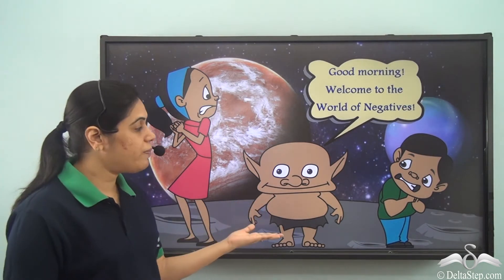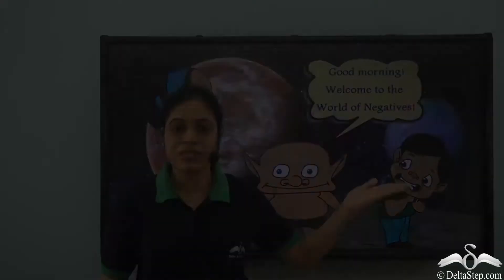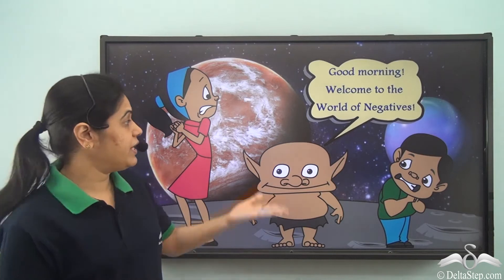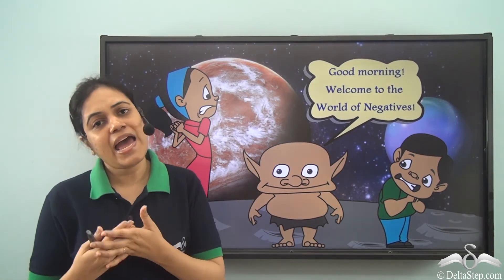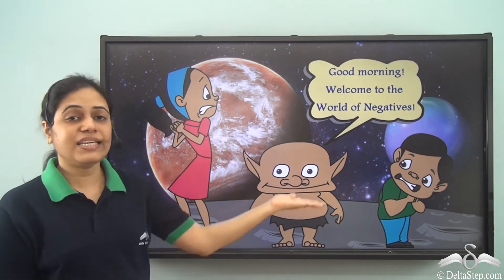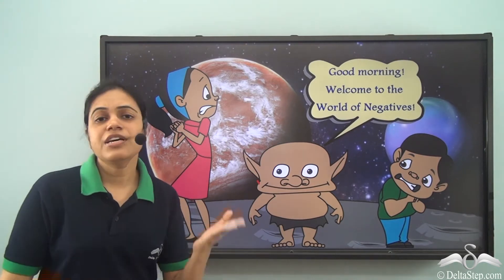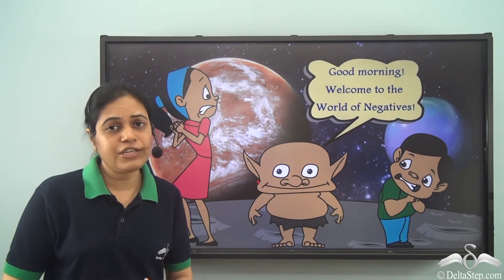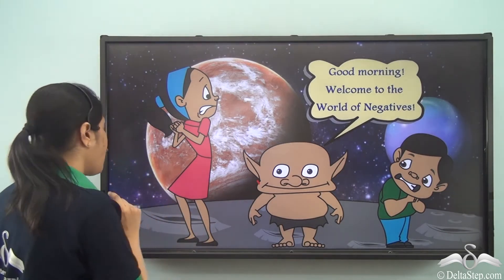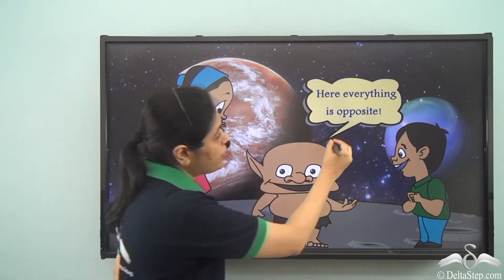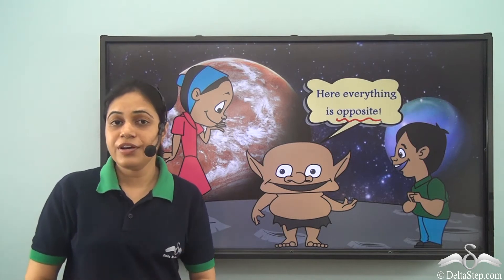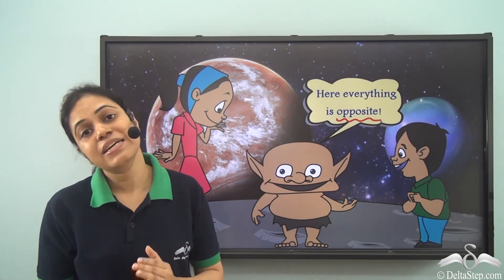Who is this goblin? What is this world of negatives? And more importantly, it is night as we can see, then why is the goblin wishing them good morning? The goblin understood their confusion and said that this is the world of negatives, very different from where they came. Over here everything is exactly opposite — day is night and night is day.